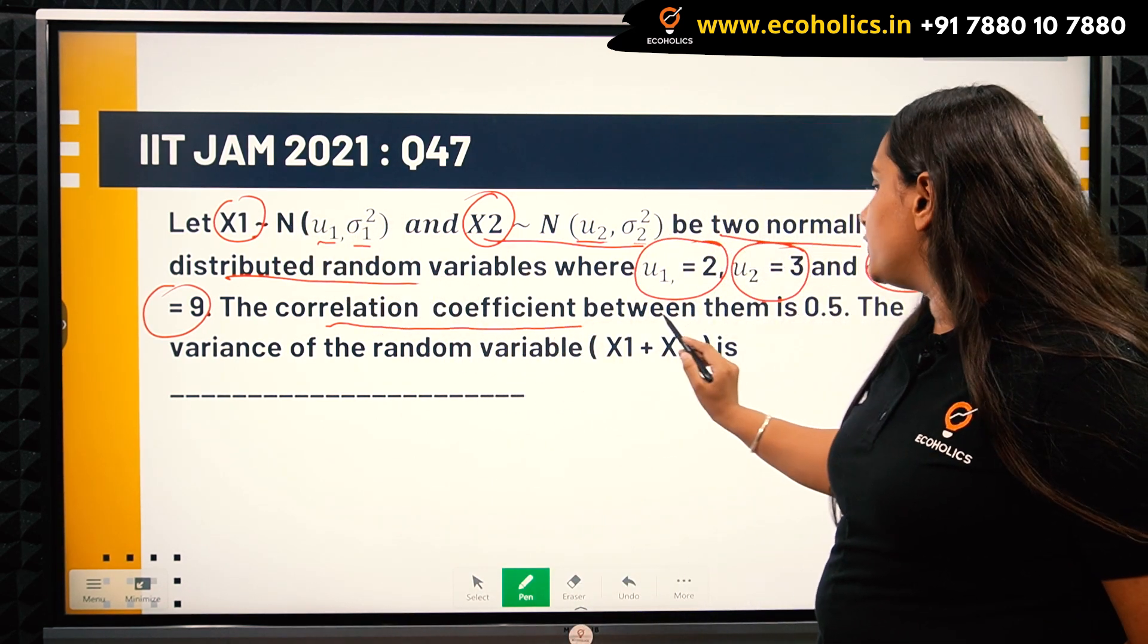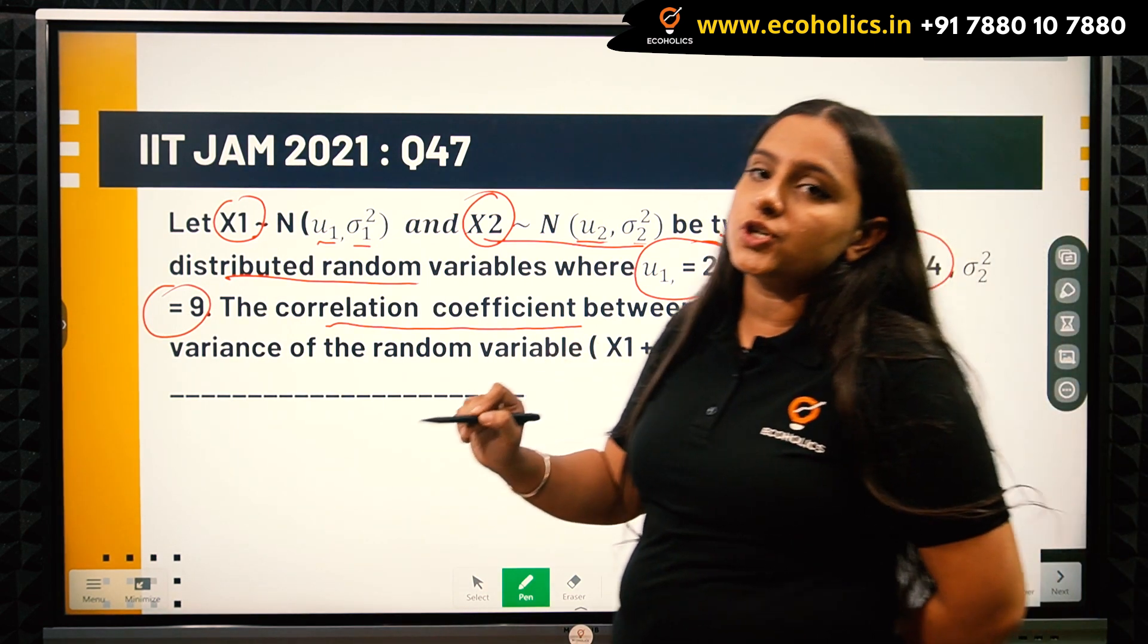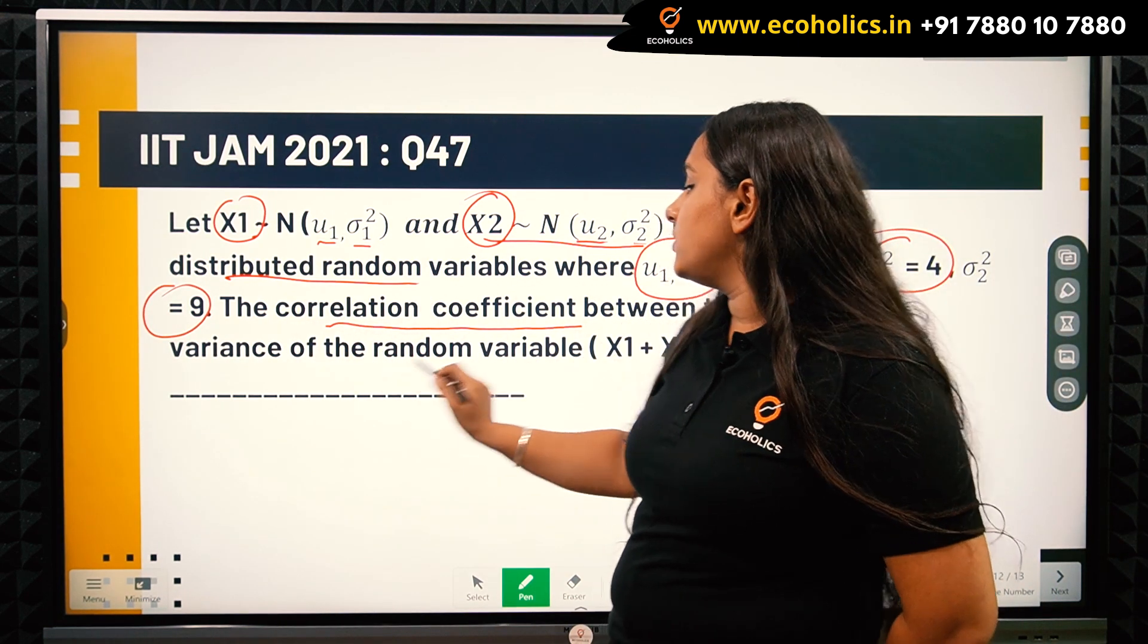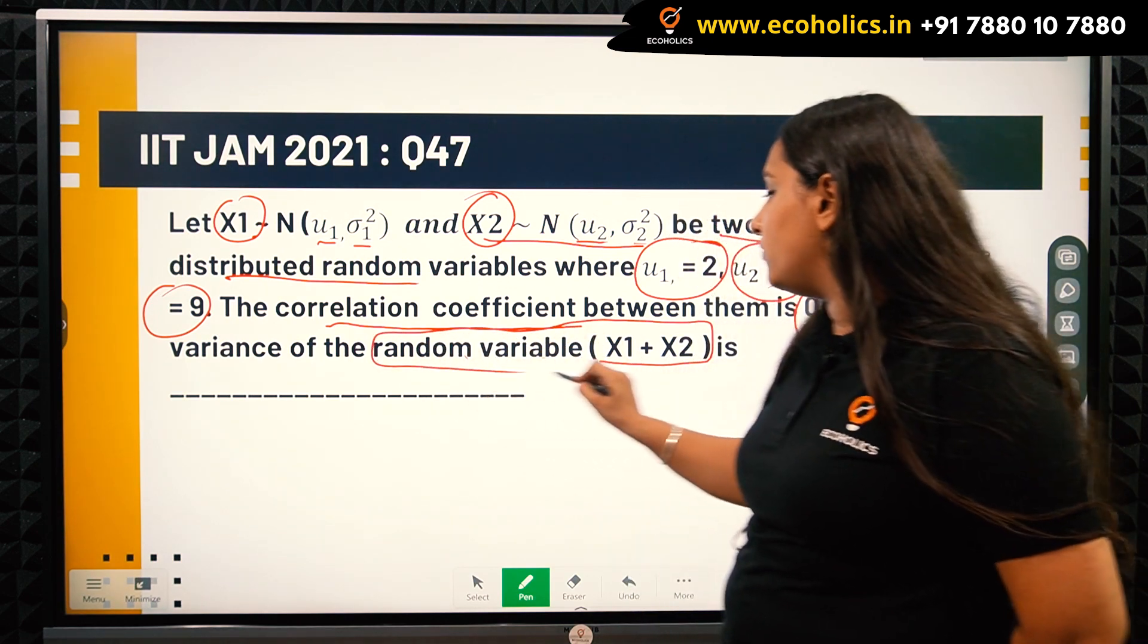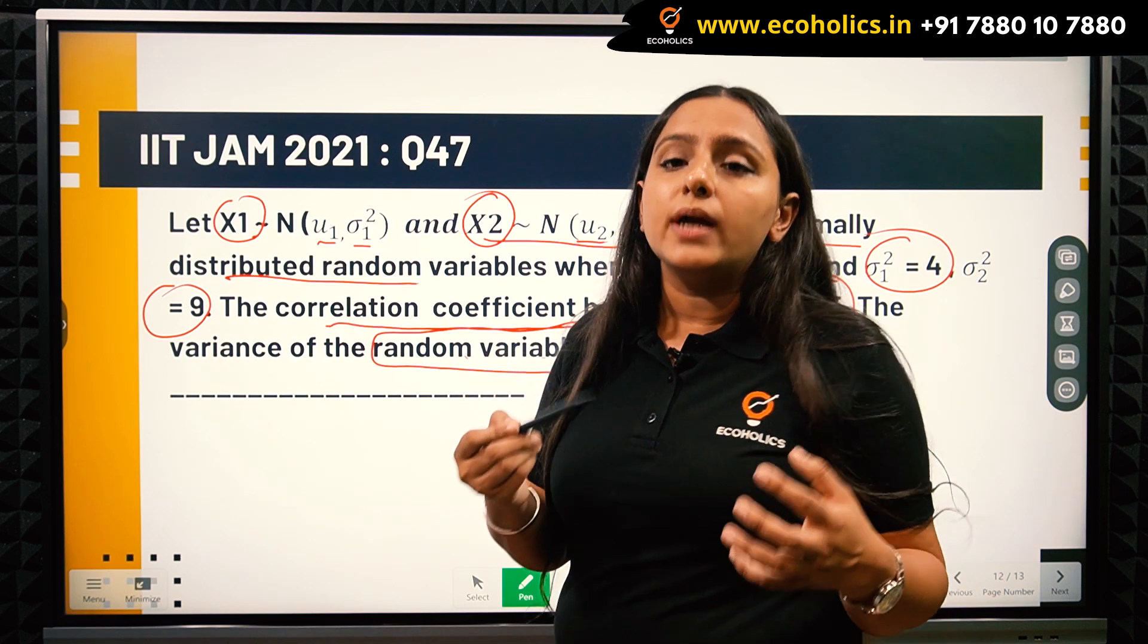We need to find the variance of the random variable X1 plus X2. If I add these two random variables, X1 plus X2 would also be a new random variable, so I want to find the variance of this new random variable.